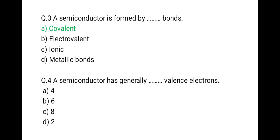The next question is: a semiconductor generally has how many valency electrons? The correct option is 4, because all semiconductors are tetravalent — they have 4 valence electrons.